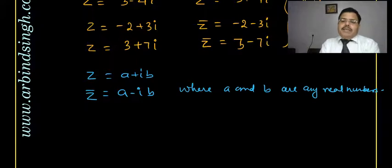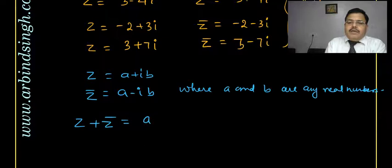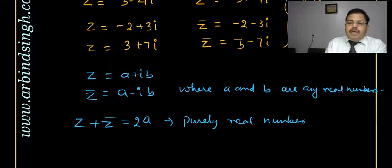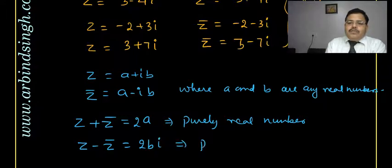Remember, b is a real number but iota b is imaginary. Now, z plus z-conjugate: the iota b terms cancel and what remains is 2a — that is purely a real number. And if we find z minus z-conjugate, then a cancels and what remains is 2 iota b — that is purely an imaginary number.